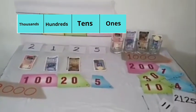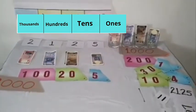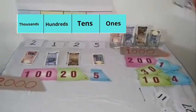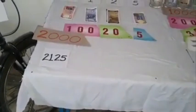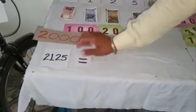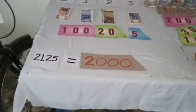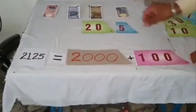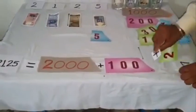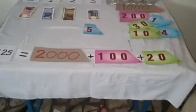In the same way, let's learn the expanded form of the numbers. The number is 2,125. Let's expand this number. When we expand, we get 2,000 plus 100 plus 20 plus 5.